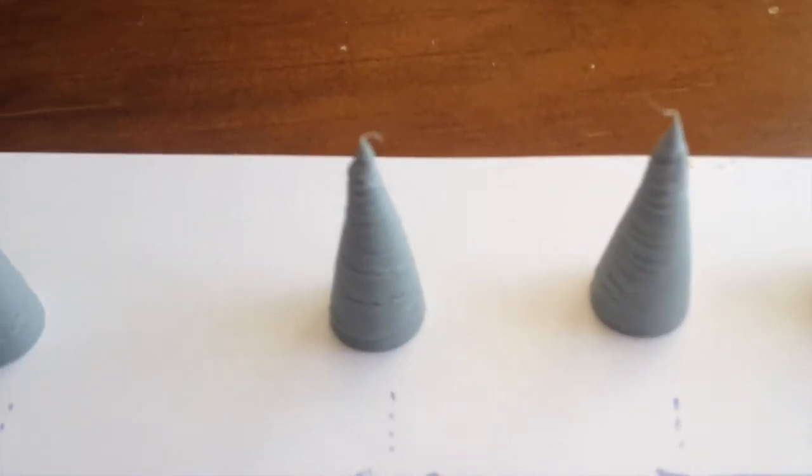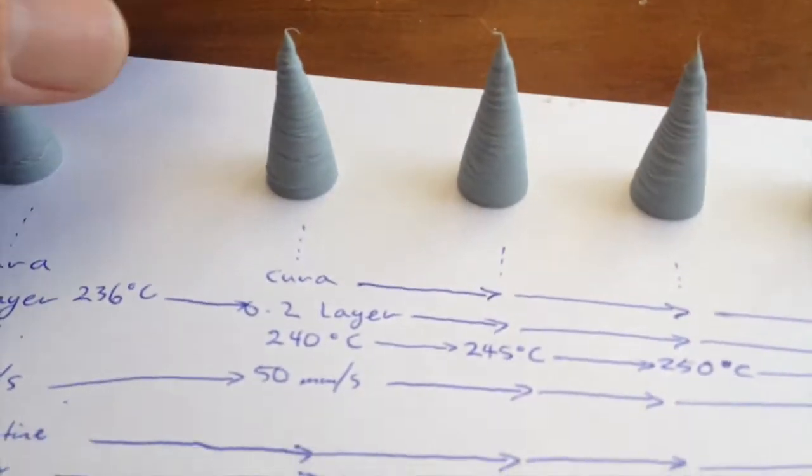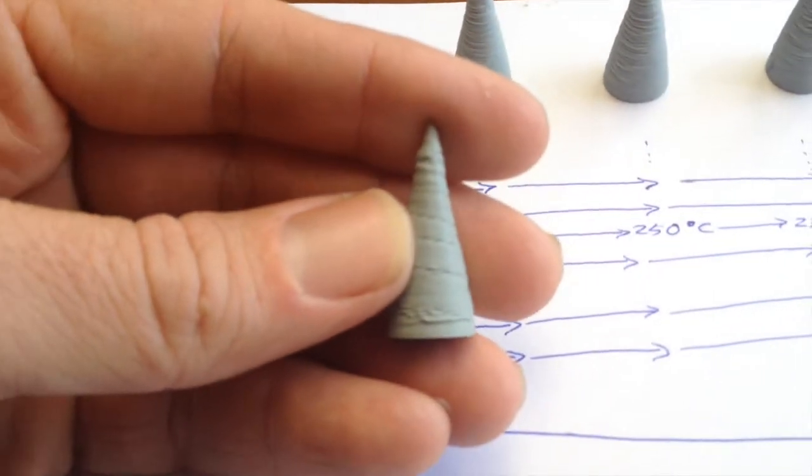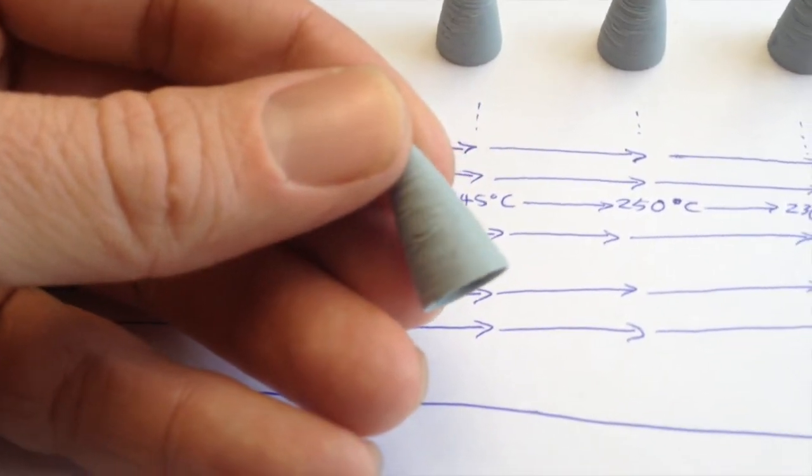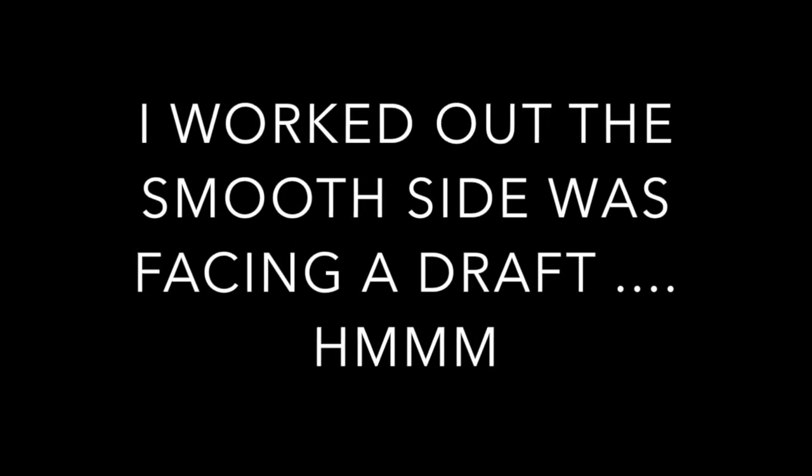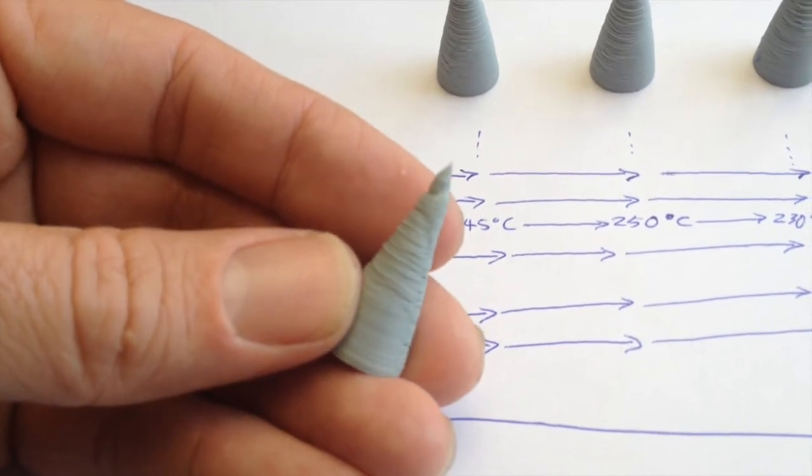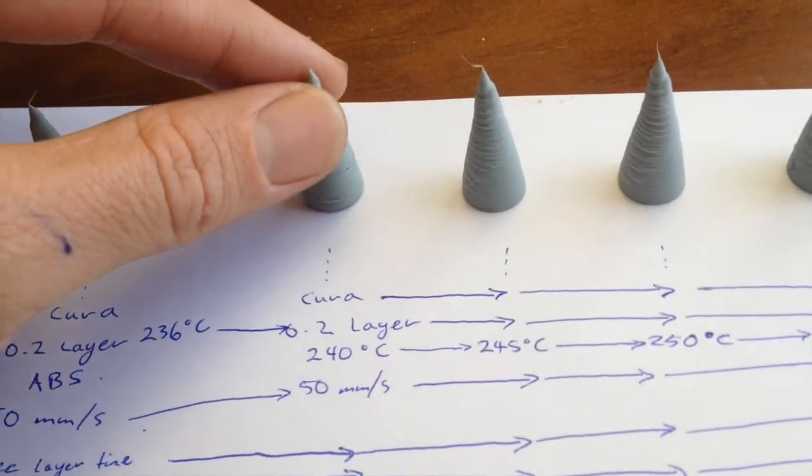And then I started increasing the temperature by 5 degrees each time. Something I started to notice on them was, if you have a look at this, the back side of them is looking pretty rough, but see that? There's a smooth side. And also, there's still distortion up the top there, from where there's a lot of heat in the top there, and it wiggles around as it's laying it.